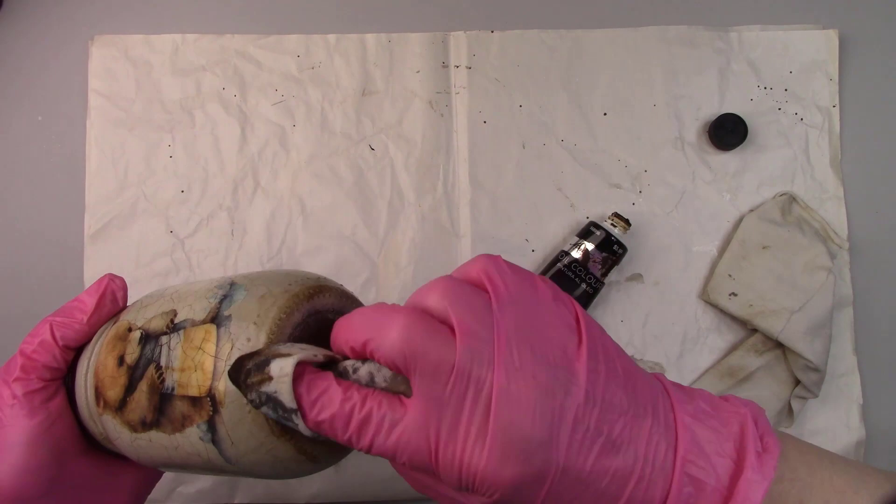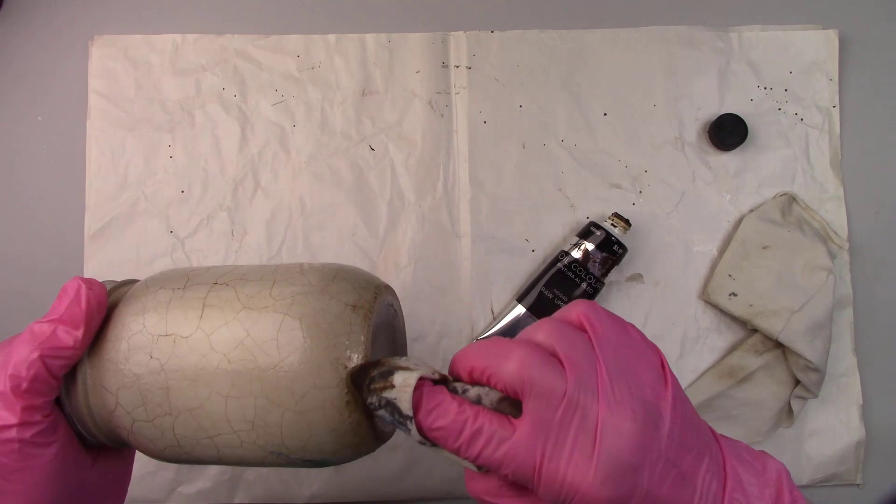I'm also adding some of the antiquing around the bottom of the jar and at the very top under that edge. It really adds to that vintage appearance.